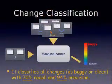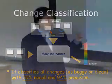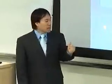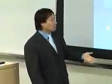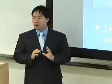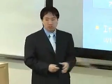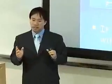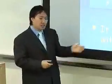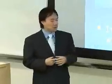A quick summary of the results: after having enough data, we can classify all changes as buggy or clean with 70% recall and 94% precision. The basic idea is: when we say it's buggy, 94% of the time it really is buggy. 70% recall means we can capture about 70% of bugs — we still miss 30% — but we can capture 70%. I'm going to show you how we achieve this high precision and recall.